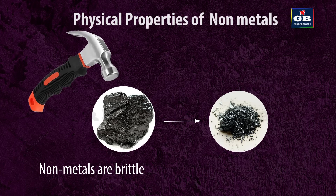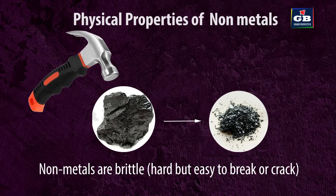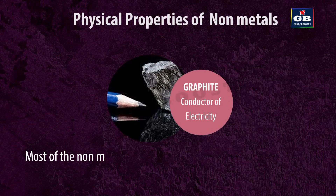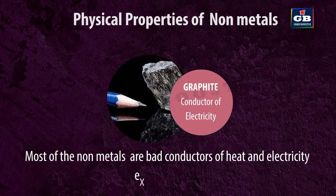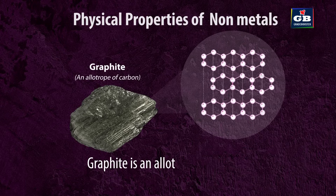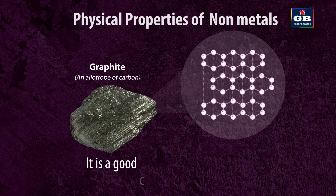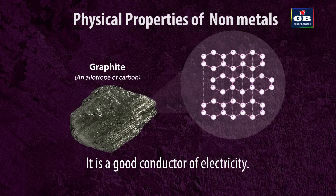Non-metals are brittle — hard but easy to break or crack. Most non-metals are bad conductors of heat and electricity, except graphite. Graphite is an allotrope of carbon and is a good conductor of electricity.